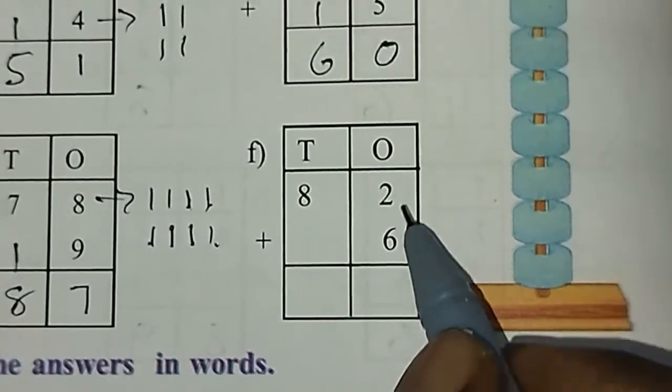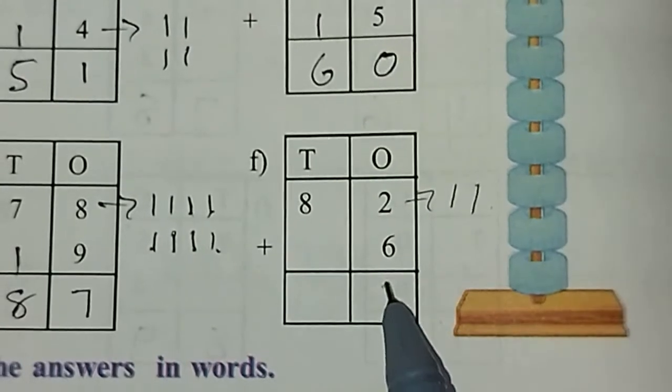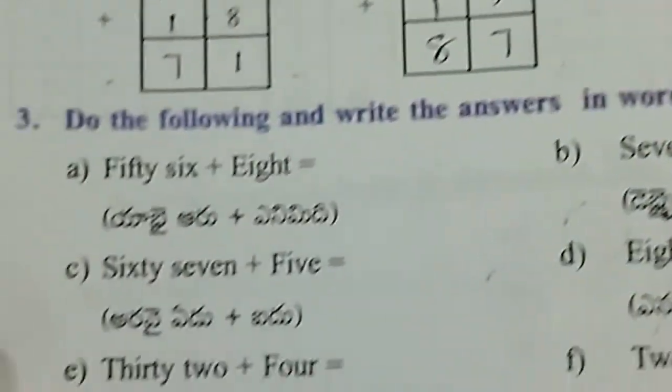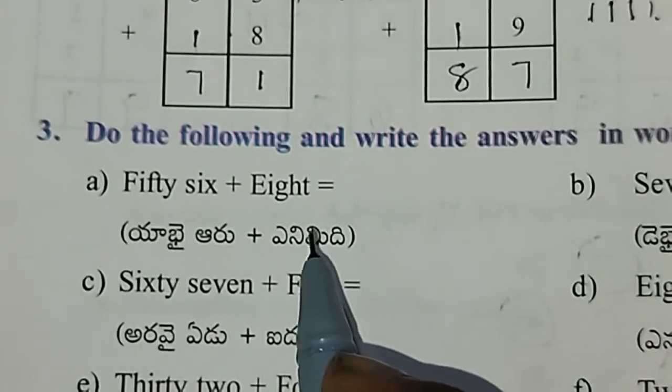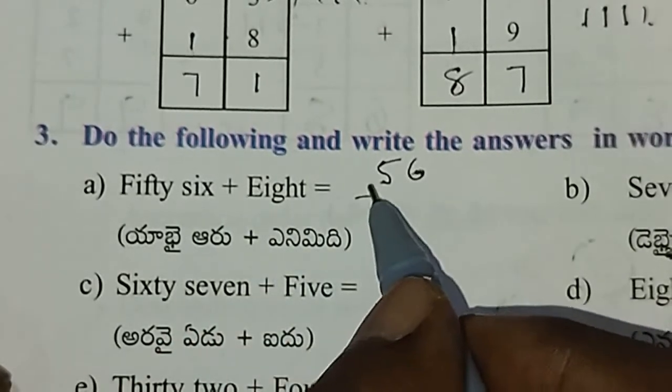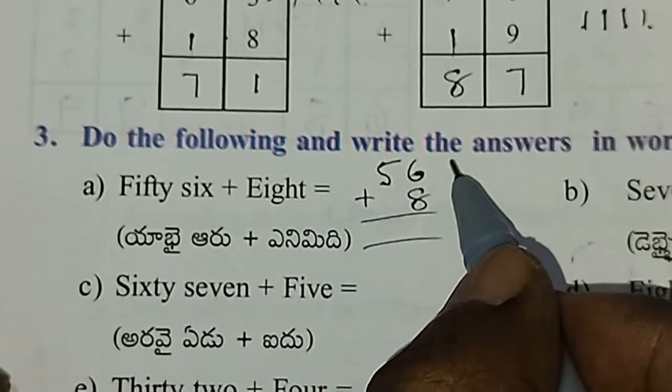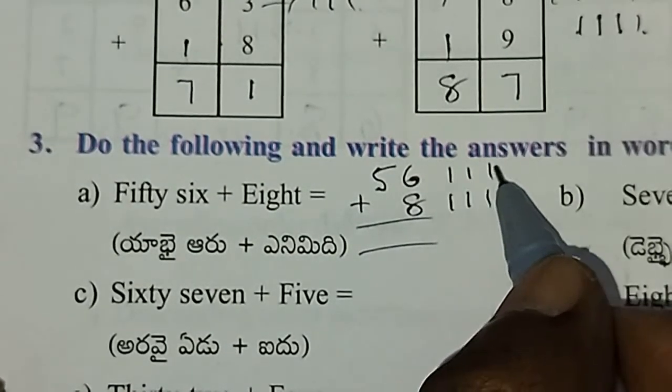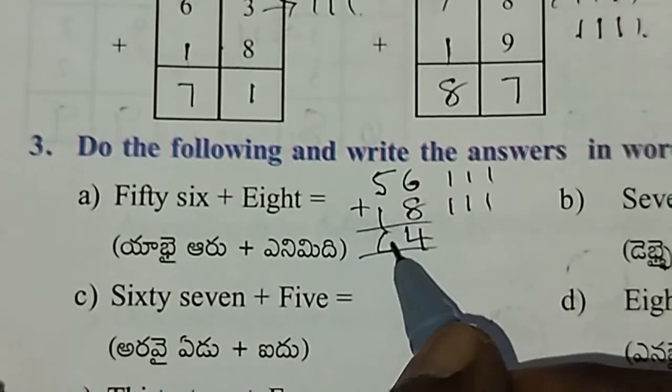Next, we have 56. For 56 plus 8, let's solve 8 plus 6. Count: 1, 2, 3, 4, 5, 6, then after 8 is 9, 10, 11, 12, 13, 14. So 8 plus 6 equals 14. Then 5 plus 1 is 6.